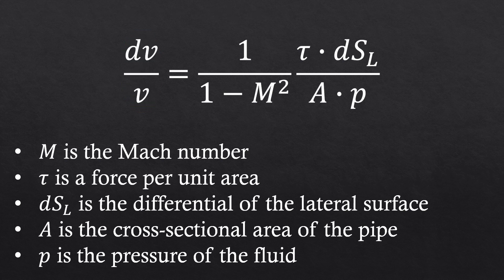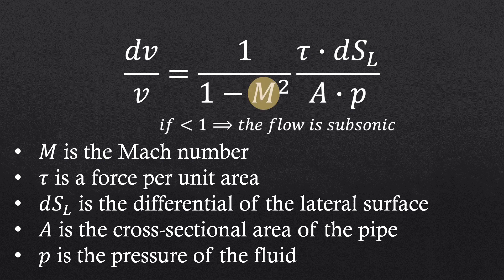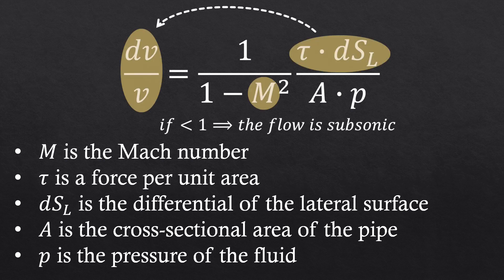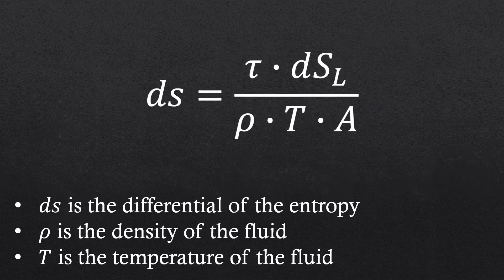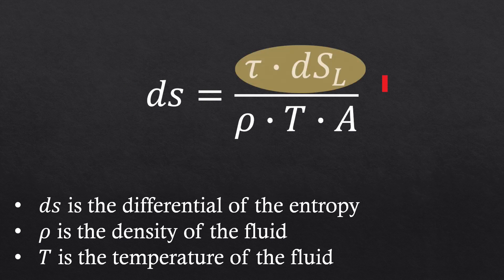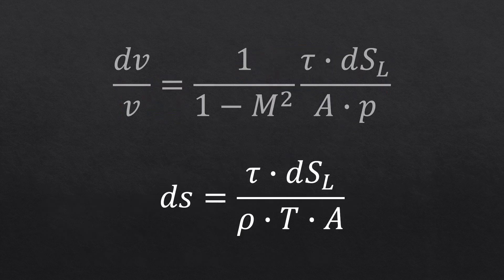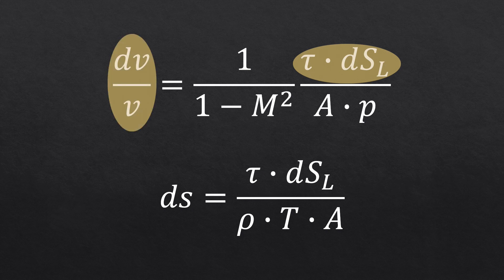The counter-intuitive fact here is that when the flow is subsonic, friction actually acts to increase the velocity. The greater the friction, the more the flow accelerates. But why? Well, we need to take a look at the entropy, which is required to increase according to the second law of thermodynamics. In our case, as friction increases, entropy also increases. So basically, friction accelerates the flow because that's the only way for the entropy to increase.